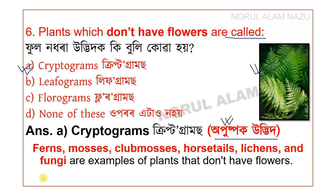Plants without flowers include mosses and club mosses. These plants are known as cryptogams — plants that do not produce flowers or seeds.